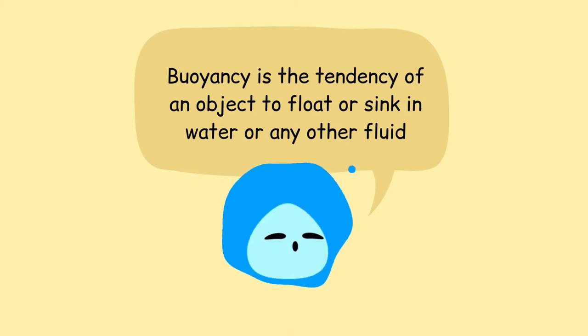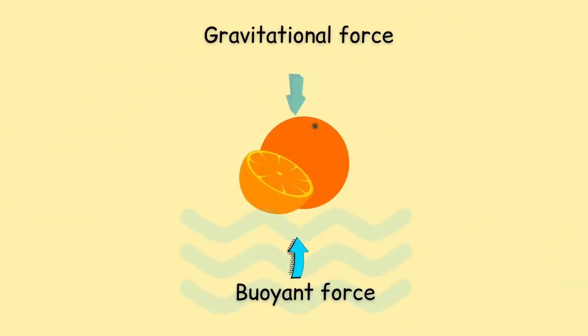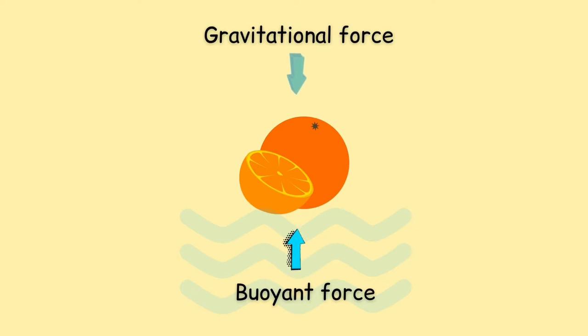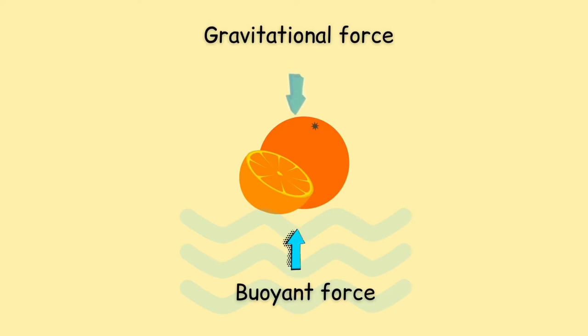Buoyancy is the tendency of an object to float or sink in water or any other fluid. When the grapefruit is placed in the water, there are two forces working in opposite directions. Gravity pulls the grapefruit down with a force equal to the weight of the object. Buoyant force pushes the grapefruit upwards with the same force as the weight of the water that the grapefruit moves. So, if the grapefruit moves water which is equal to or more than its weight, it will be able to float.